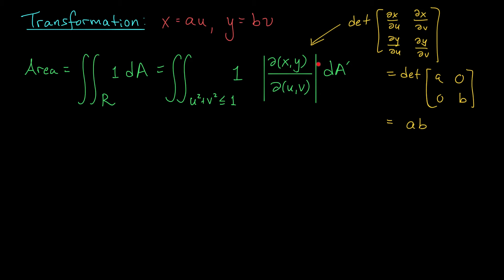Recall at this point that a and b are positive constants. So when I take their absolute value here, nothing is going to happen. I can write my integral as the double integral over the inside of the unit circle, u² + v² ≤ 1, of ab dA'. This dA' term, by the way, just represents the area factor in terms of u and v. I just didn't want you to get confused with this dA term, which is our area factor in terms of x and y.